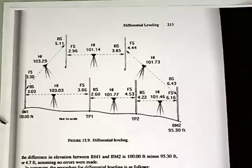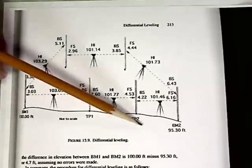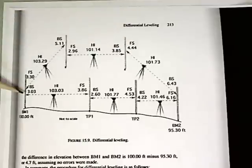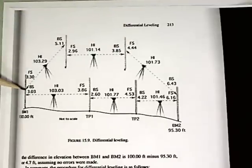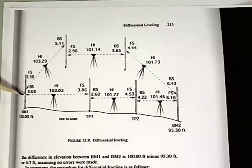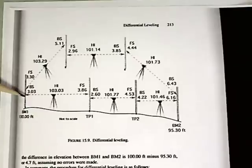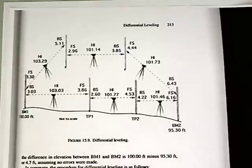If we start out at 100.00 feet, do the survey all the way around, and finish with a foresight reading onto benchmark 1, what should the elevation be? It should be 100 feet. Is it going to be? I don't know — it depends on how good you are at surveying, but it will be something close, hopefully.